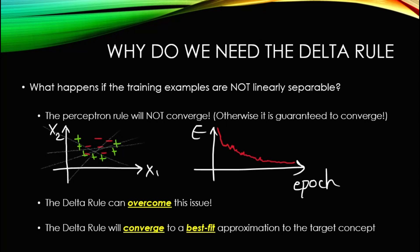That would be a model behaving very nicely. But the problem is that if your training examples are not linearly separable, you have a big problem using the perceptron training rule. If you look at your error in that case, it would show no hint of reduction at all — it fails to converge, as simple as that.